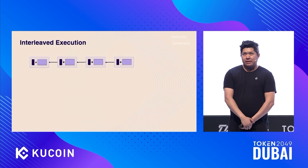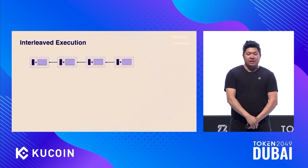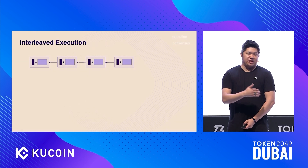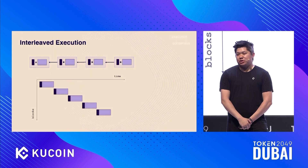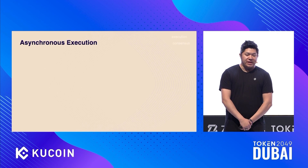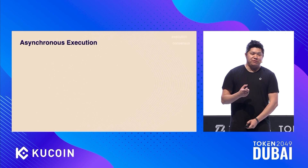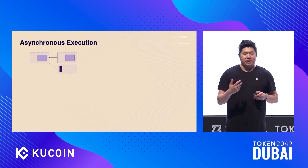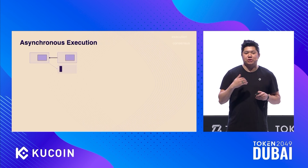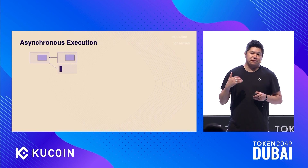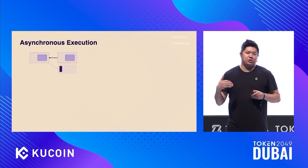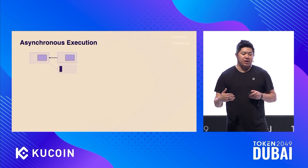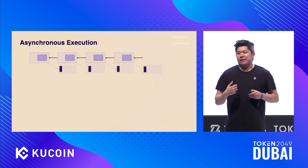Here's a simple schematic: execution is the dark block and consensus is the light block, showing a couple of blocks proceeding one after the other. Asynchronous execution is the idea of moving execution out of the hot path and only doing consensus — having all nodes agree on the official ordering of transactions without executing. Then after consensus completes, two things can happen in parallel in separate swim lanes: consensus over the next block, and execution over that list of transactions we've just agreed upon.